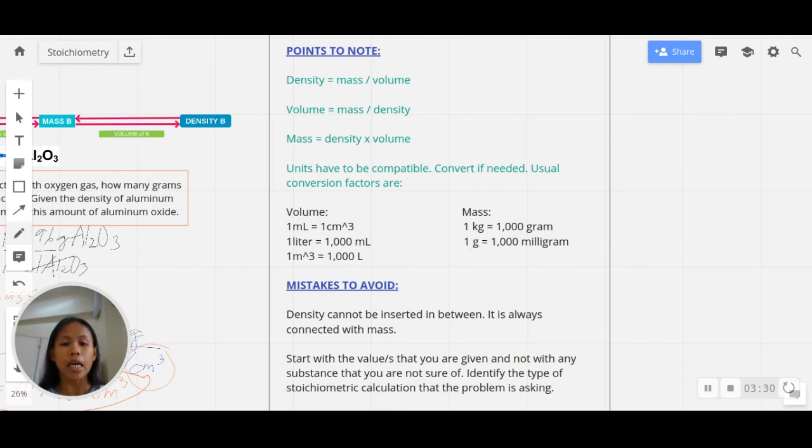Mistakes to avoid: density cannot be inserted in between. When we say in between, remember densities are always just extensions of masses—mass of the given or mass of the required. So it's always on both ends of the stoichiometry roadmap. And start always with the values that you are given, not with any substance mentioned in the problem. Identify first what type of stoichiometry calculation you're going to do based on what you're given and what you're required.